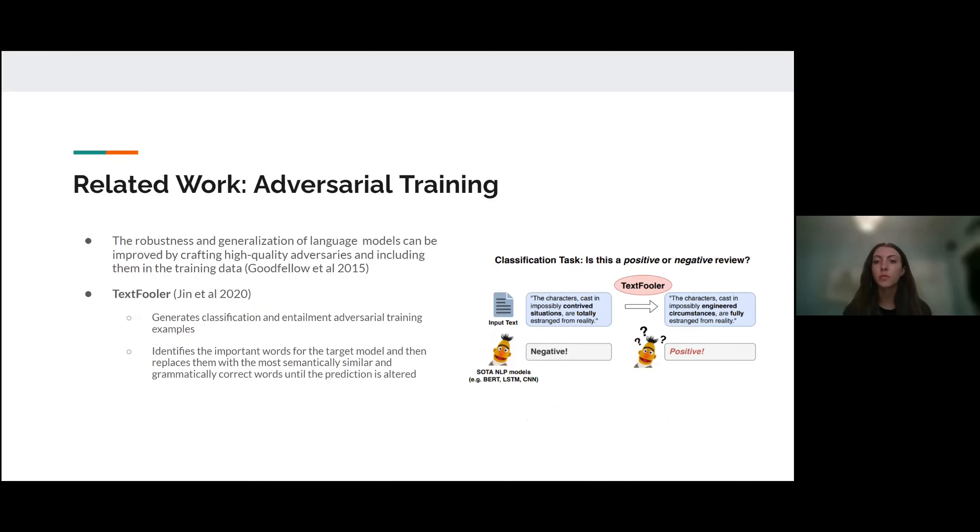Past work in domain adaptation has shown that the robustness and generalization of language models can be improved by including adversarial examples in the training data. Based off of these observations, some models have begun leveraging generative data augmentation techniques. One example of this is TextFooler. TextFooler is a generative algorithm meant to test the robustness of cutting-edge language models such as BERT. It identifies the important words for the target model and then replaces them with the most semantically similar and grammatically correct words until the prediction is altered.